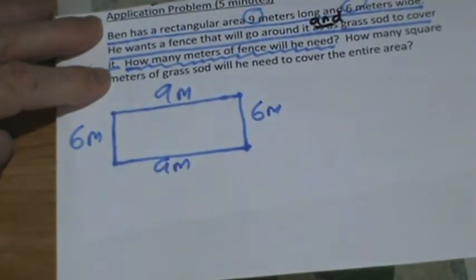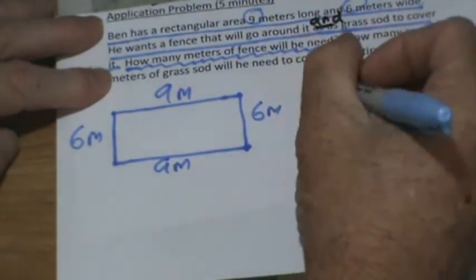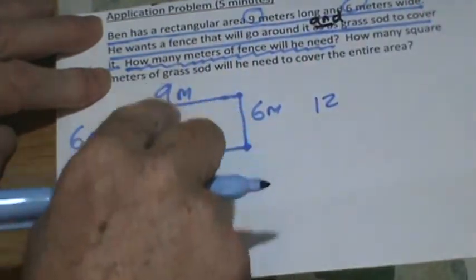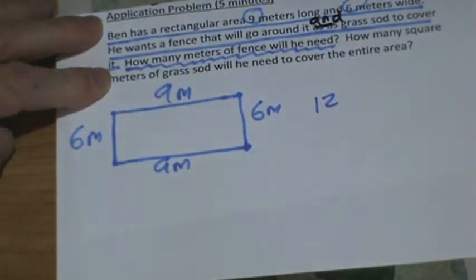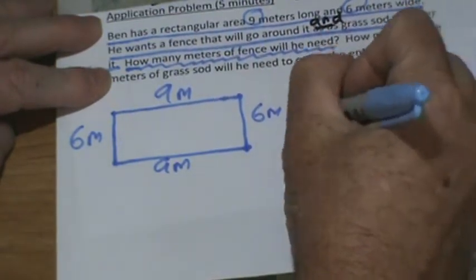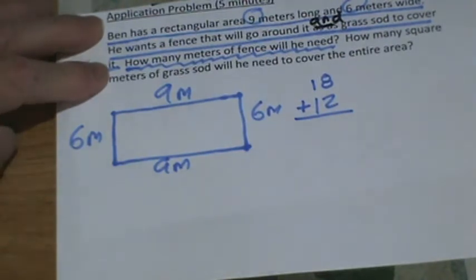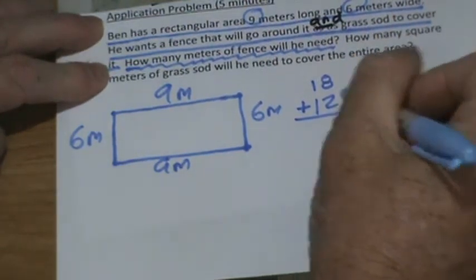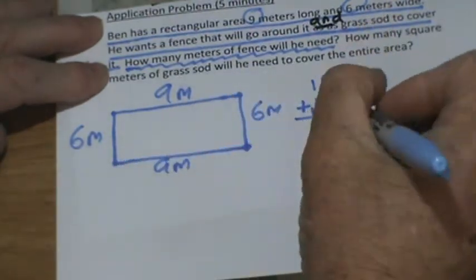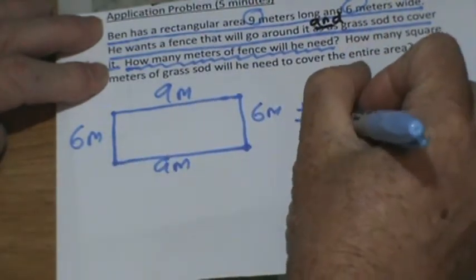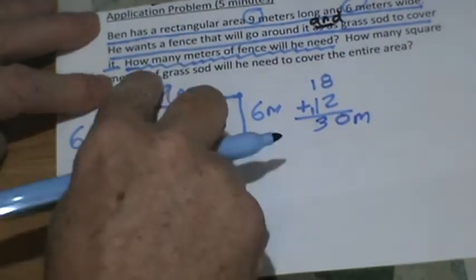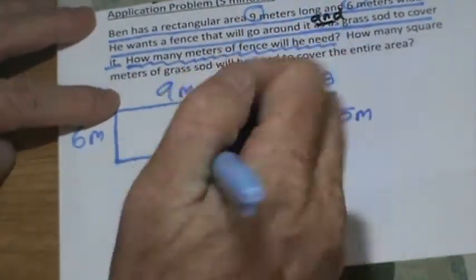What's six plus six, or six times two? Twelve. What's nine times two, or nine plus nine? Eighteen. I'll put the larger number on top — that's always a little easier. So now I'm ready to add: eight, nine, ten. Put my one over here and go one, two, three. And don't forget your measurement — thirty meters.